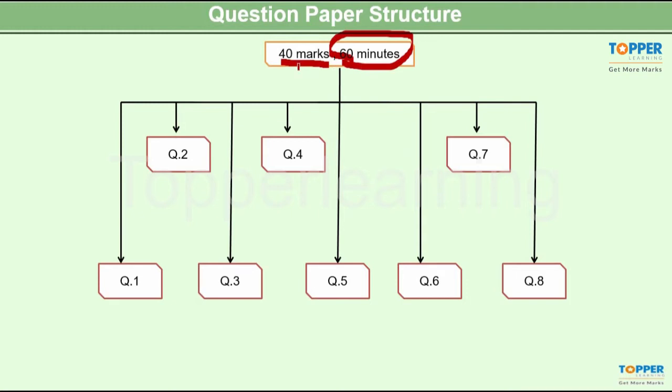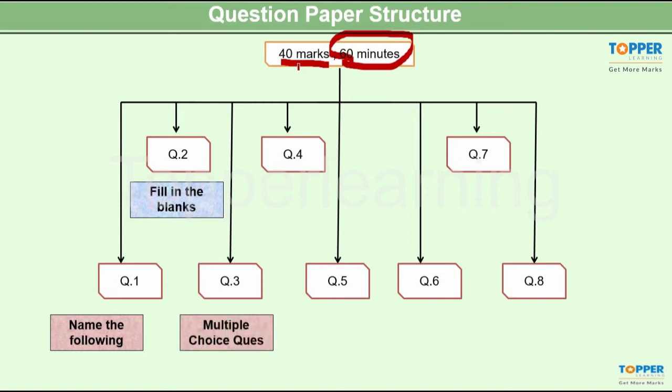The 40 marks paper was divided into 8 questions. These 8 main questions comprised of 5 sub-questions for every question type. Question 1 was name the following. Question 2 was fill in the blanks. Question 3 was multiple choice question.